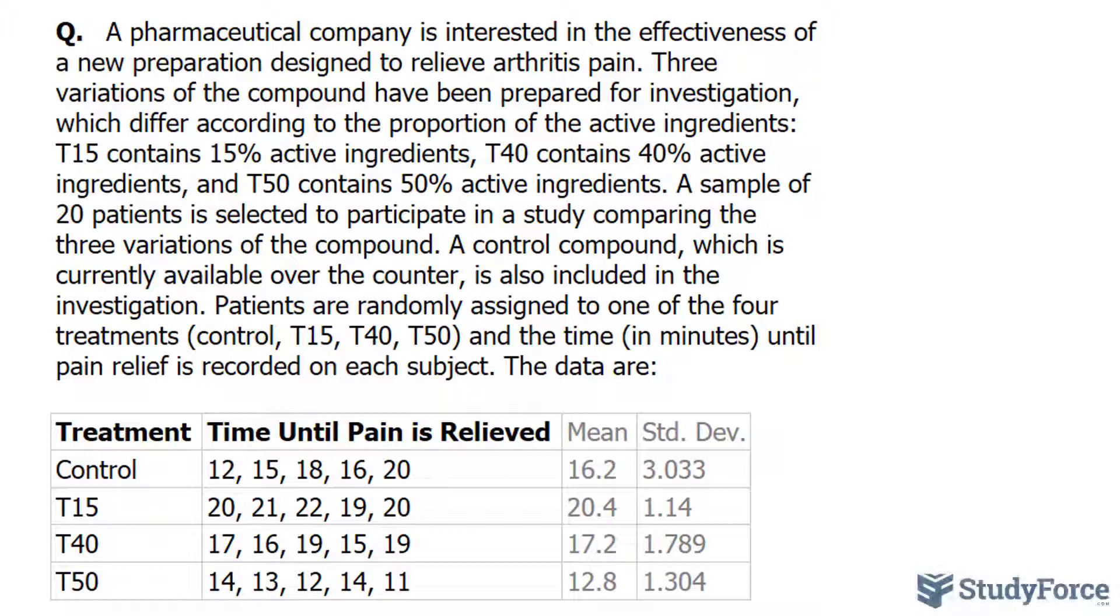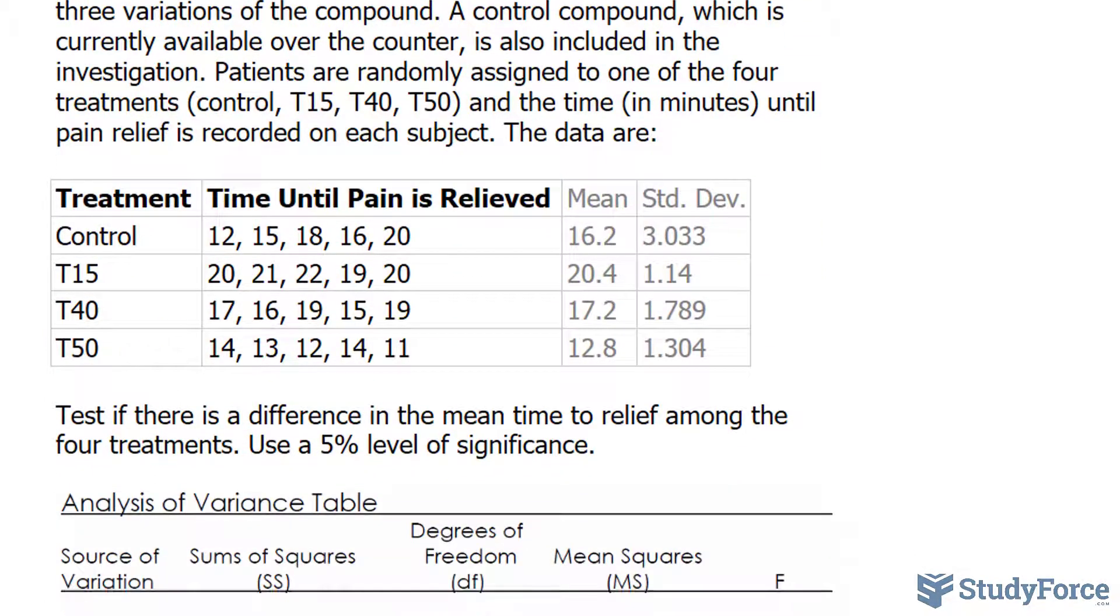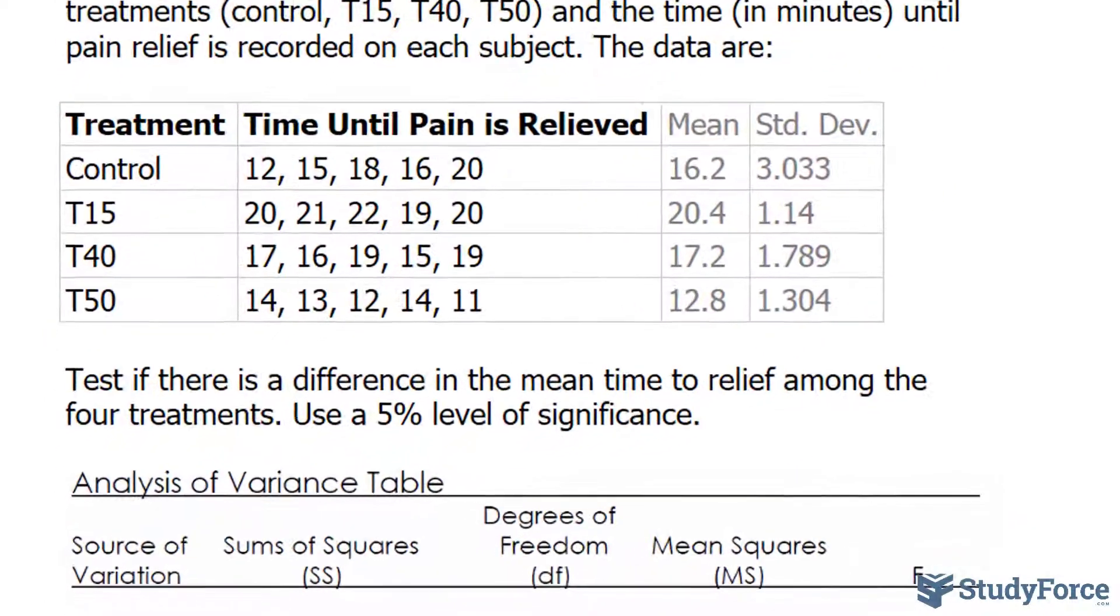A control compound, which is currently available over the counter, is also included in the investigation. Patients are randomly assigned to one of the four treatments, and the time in minutes until pain relief is recorded on each subject. Take a look at what we found. These were the times that it took for people to be relieved with the control, with the T15 concentration, and the rest as shown.